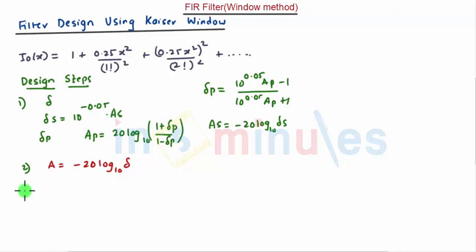The third step is to calculate the parameter beta from the equations proposed by Kaiser. These equations are valid if we found A first and are dependent on the range of A. Beta has three ranges. The first range is when A is greater than 50, then beta equals 0.1102 times A minus 8.7.